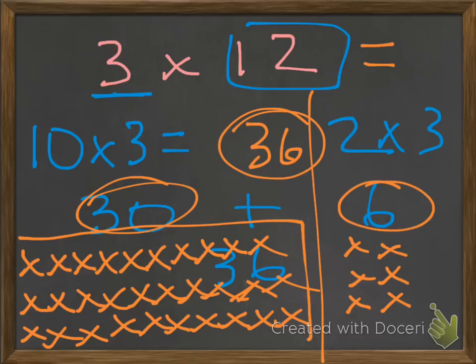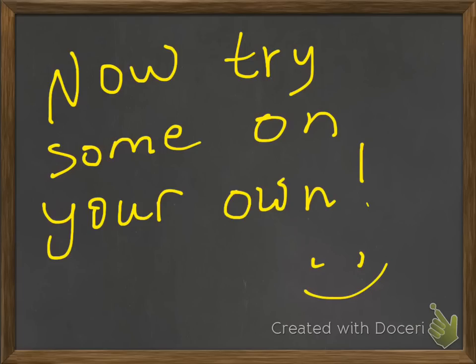So whether you did it just the regular algorithm—3 times 12, multiply straight out—or if you split it to make it easier to do the problems, or if you draw it out and make it an array, you can easily solve it. Now try some on your own. Good luck.